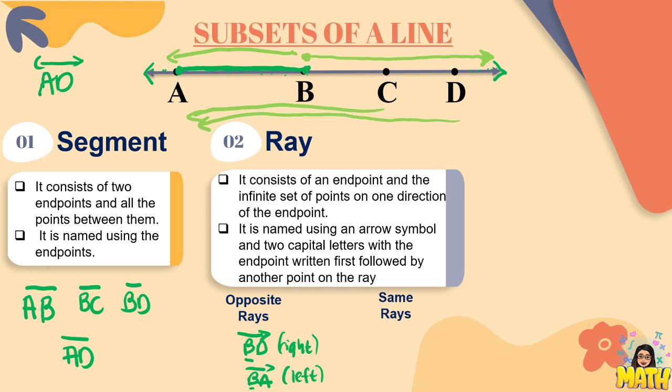While, kapag dinawag nating same rays, these are pairs of rays, just like BC and BD, in which they have the same endpoints, and they extend indefinitely in the same direction.